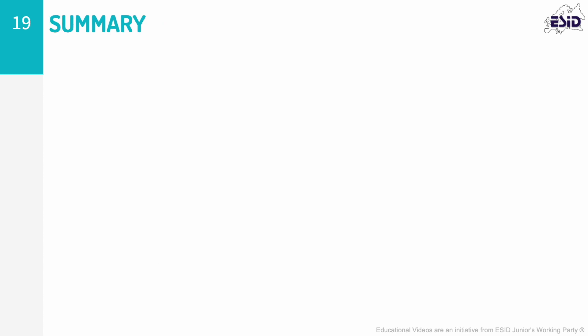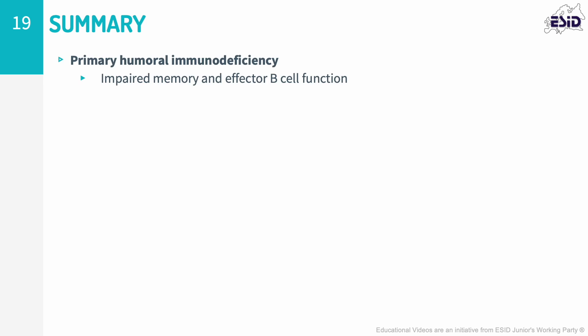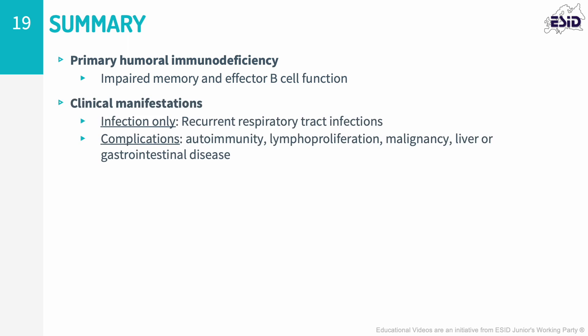In conclusion, CVID is a heterogeneous primary humoral deficiency associated with impaired memory and effector B-cell function. Clinical symptoms can appear at any time, but most frequently present between the second and third decades of life. Patients are divided on the basis of their clinical presentation into infection-only — typically presenting with recurrent respiratory tract infections by encapsulated bacteria — or patients with a more complex disease, including autoimmunity, lymphoproliferation, granulomatous inflammation, or malignancy. Life-threatening complications can be due to chronic lung disease, bronchiectasis, GLILD, chronic enteropathy with malabsorption, liver dysfunction, or lymphomas. The pathogenesis remains poorly understood, with monogenetic defects currently recorded in only about 20% of patients.